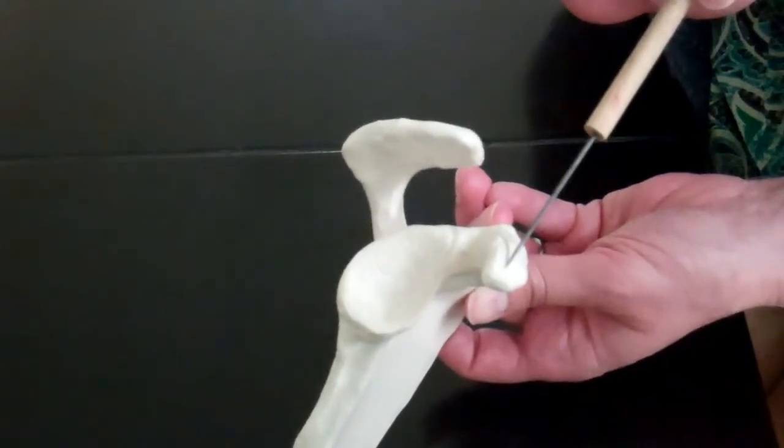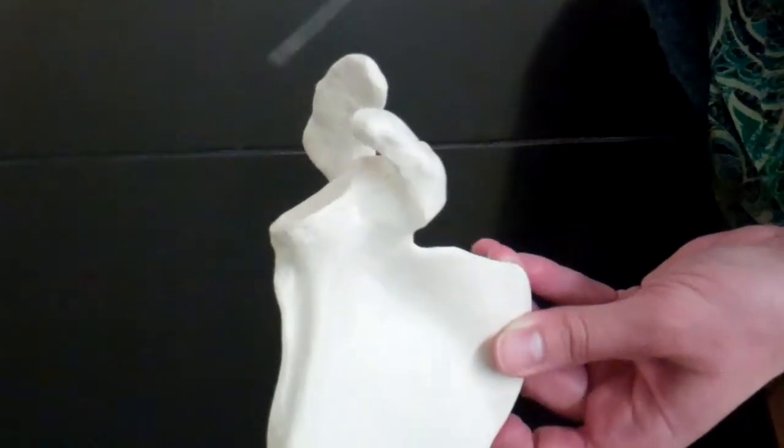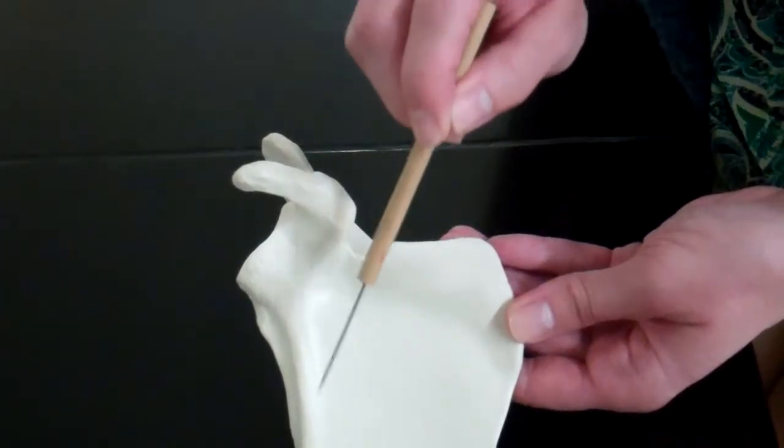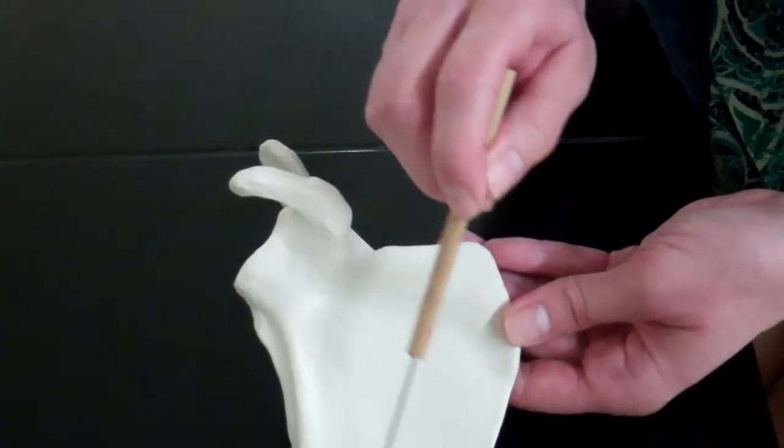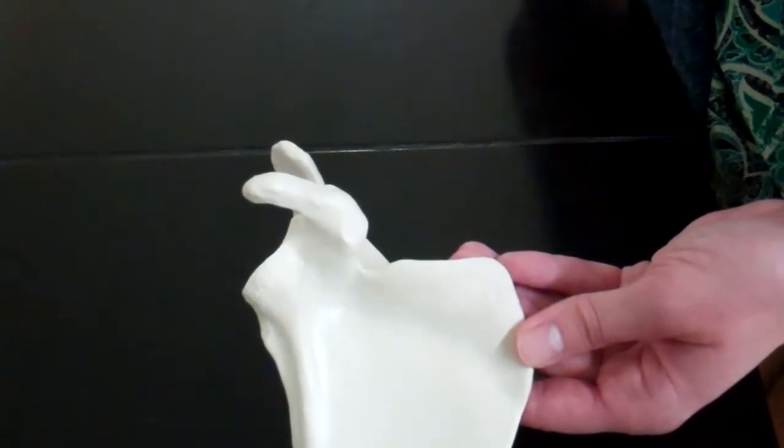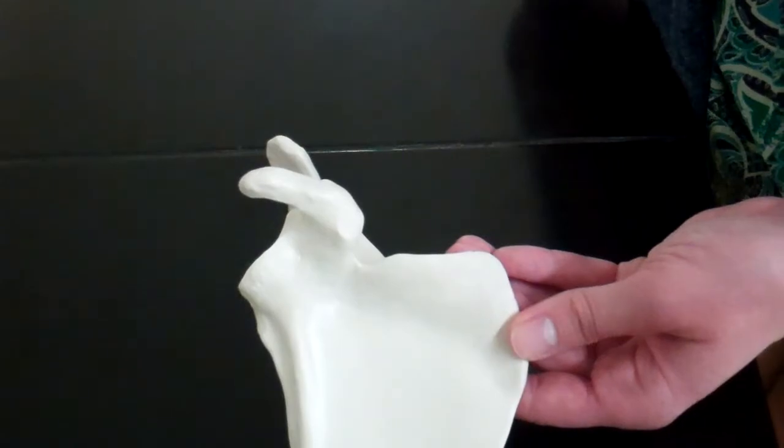And then there is one more flat area that we can see on the scapula that's going to be on our anterior side which is the subscapular fossa. It's a flat spot and now these fossas we just ran through are going to be really good attachment points where we'll find some muscles later on.